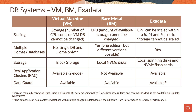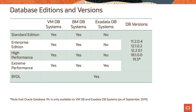This slide shows you the comparison between the three different offerings — virtual machine, bare metal, and Exadata — on Oracle Cloud Infrastructure, covering various capabilities such as scaling storage and cores, the ability to have multiple database homes and databases in the service, as well as high availability and disaster recovery features. You can also see the various DB system offerings, the different database editions, and the bring-your-own-license model support for the different database systems in Oracle Cloud Infrastructure.